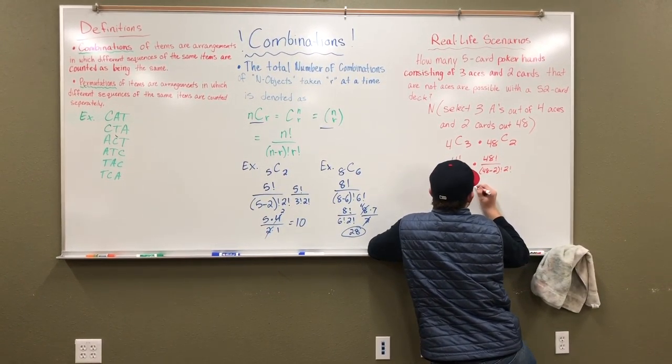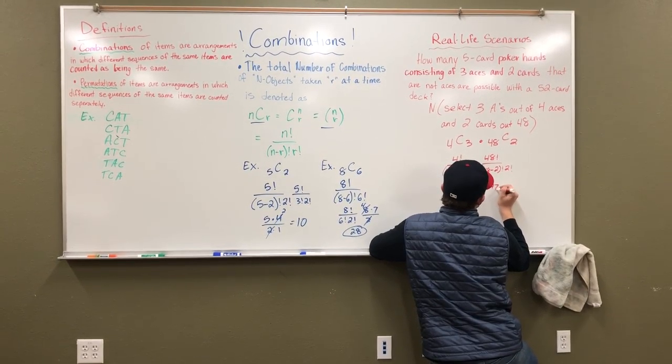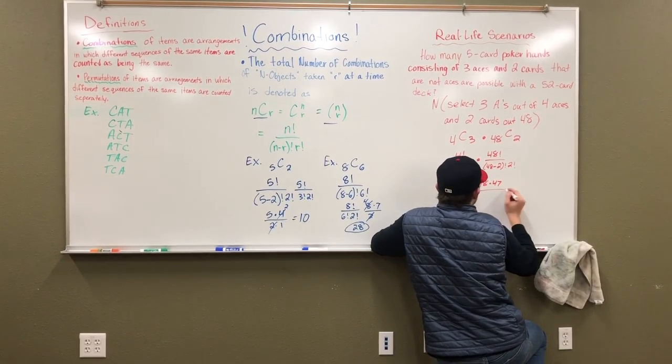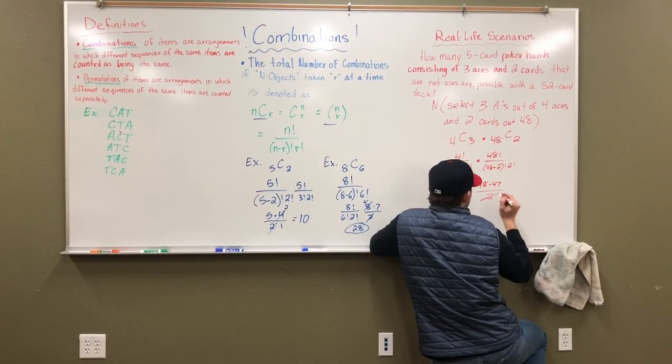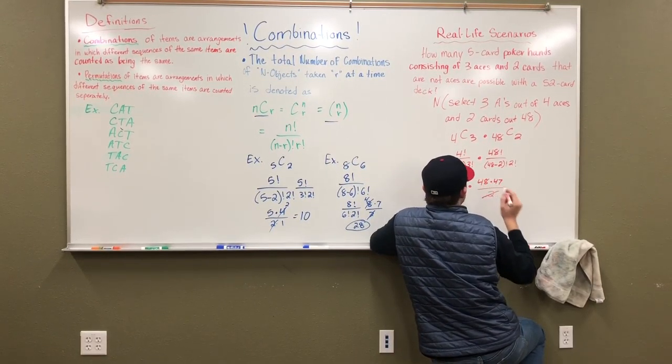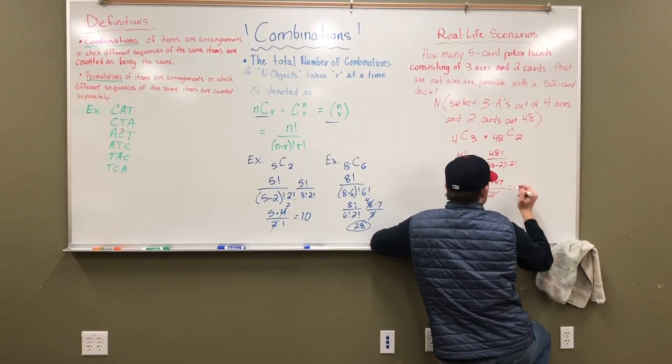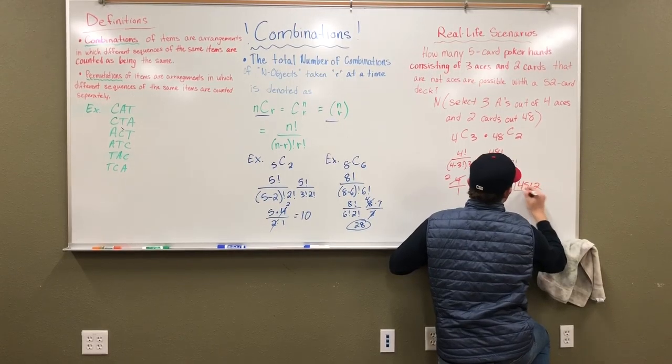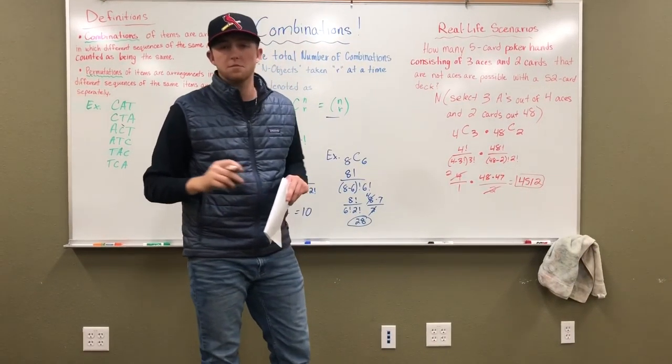So we're going to have 48 times 47 because 48 minus two is 46 factorial so we can cancel that out and we'll have two right here. And then we can just simplify this and this, make that two. So two times 48 times 47 is equal to 4512. And you guys can check that with your calculators, but I have done it pre-hand.